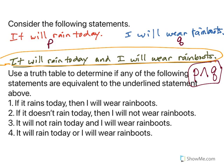Number one: if it rains today then I will wear rain boots — this is a conditional, if P then Q. Number two: if it doesn't rain today then I will not wear rain boots — another conditional, if not P then not Q. Number three: it will not rain today and I will wear rain boots — not P and Q. And number four: it will rain today or I will wear rain boots — P or Q.